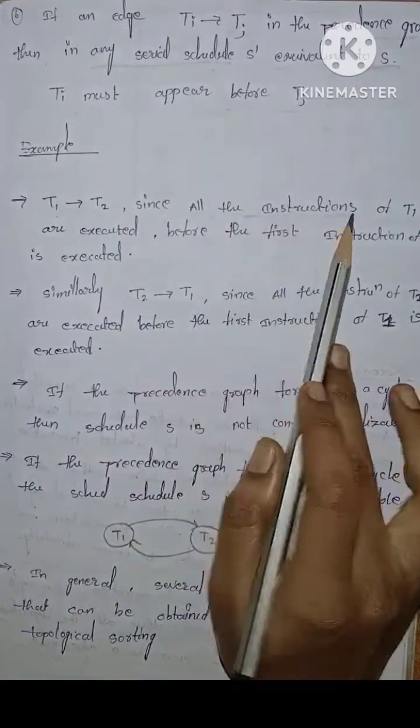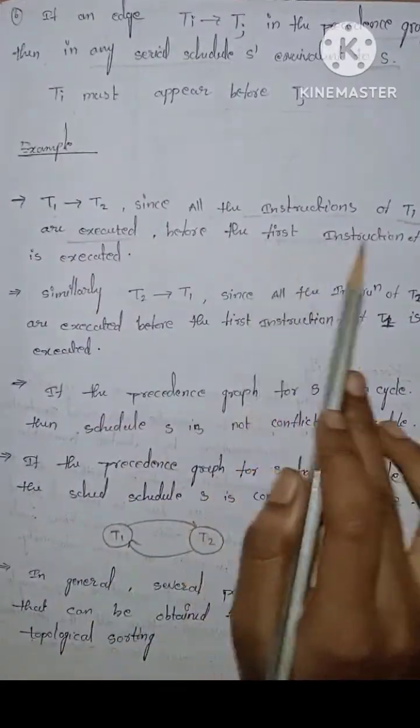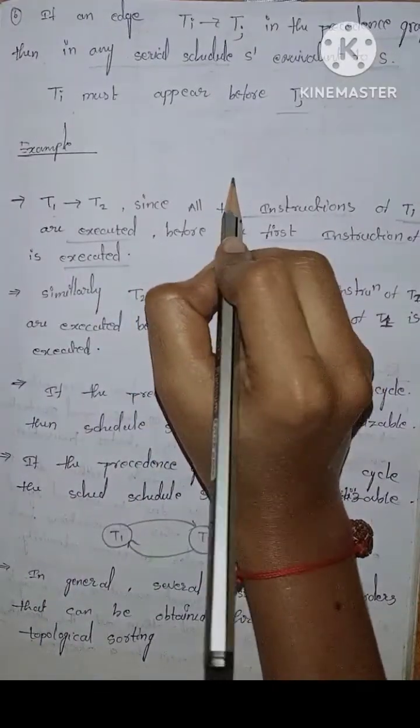T1 gives T2 since all the instructions of T1 are executed before the first instructions of T2 is executed. First before T2.